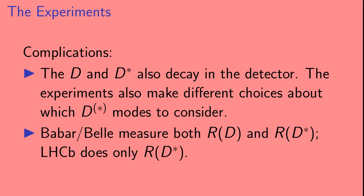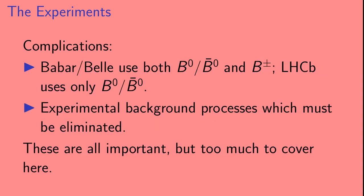And Babar and Belle both measure R(D) and R(D*). Whereas LHCb only looks at R(D*). Also, Babar and Belle look at both neutral and charged B mesons. Whereas LHCb only looks at neutral B mesons. And finally, one very important fact is that there are also experimental background processes which have to be eliminated from your data. So these are processes that are not the process that you're looking for, but that can look like it and be mistaken for it. All of these issues are important, but they're far too much to cover in this short video.